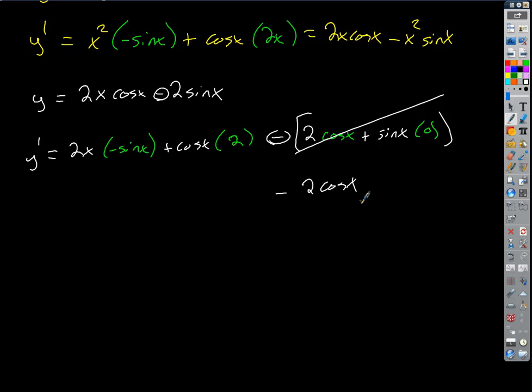So we could have much more easily in this case just gotten the answer 2 cosine x without using product rule, right? Because the 2 is a constant, so we just ignore that, right? Does that make sense? Okay, so we don't use. If the product involves a function and a constant, that's not product rule. Product rule is when we have a product of functions, right? Okay, the first one is fine.